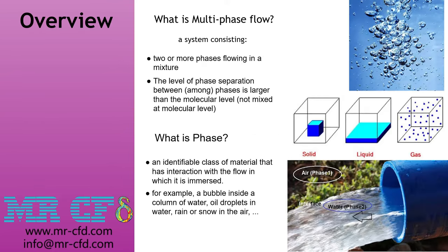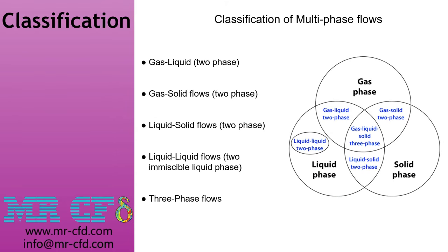Let's start by defining the term multiphase flow. A multiphase system contains two or more phases within itself, with the condition that the mentioned phases are not mixed at the molecular level and are distinguishable from each other. For those not familiar with the concept of phase, any class of material that has some kind of interaction with its surrounding environment is called a phase. It includes a wide range of materials such as solids, liquids, and gases. Examples include bubbles inside water and oil droplets in water. The three main phases — solid, liquid, and gas — and their combinations can create multiphase flows.